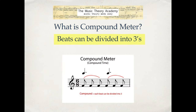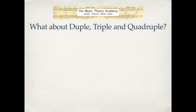What about compound meter? In compound meter the beats can be divided into threes. Here's an example of compound meter or compound time — we've got six-eight. When you're counting in six-eight you're actually counting one-two, one-two — counting dotted crotchet beats — and each of those dotted crotchet beats is divided into three. So it's described as compound meter or compound time.